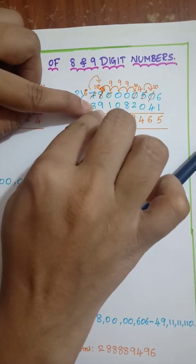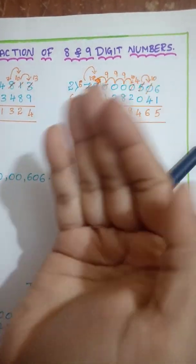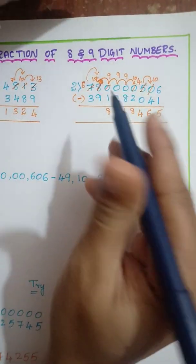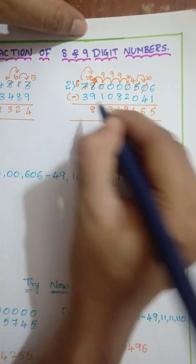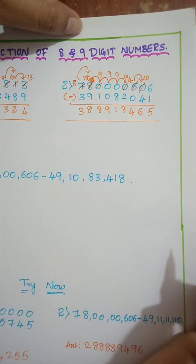So 17 minus 9. How much? Same thing you can play. After 9 what will come? 10, 11, 12, 13, 14, 15, 16, 17. That is 8. 6 minus 3, 3. Easy.